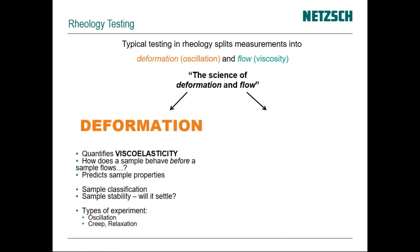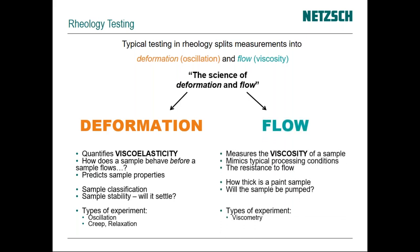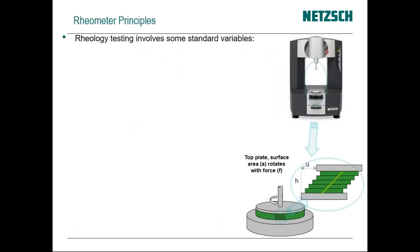Deformation quantifies the viscoelasticity of a sample. If you're doing oscillation on a sample you can see how it's going to behave before it flows — the resistance to flow or the viscoelastic structure before it starts flowing. That tells you whether it's likely to sediment or sag. We can do these tests with oscillation, relaxation, or creep. Then flow itself is mainly viscosity testing, showing you how a material will pump or be sprayed — anything where it's actually flowing.